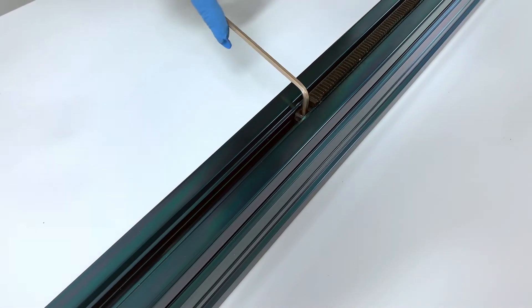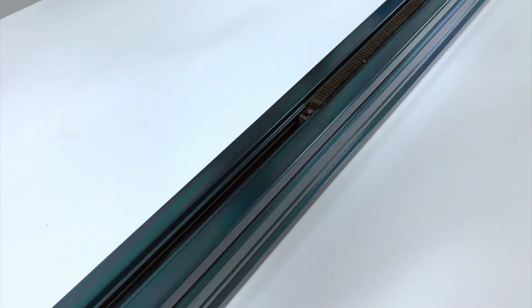If the set screw is over-tightened, you would not be able to install another rack segment. In that case, simply loosen the set screw until you are able to mesh the two segments properly.